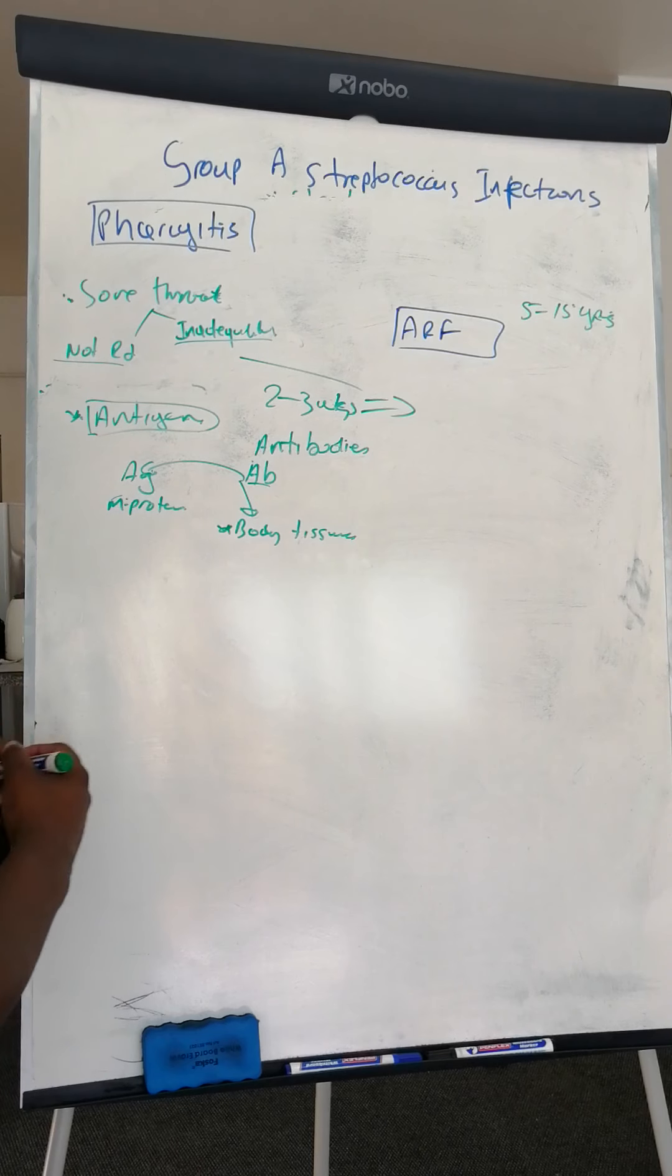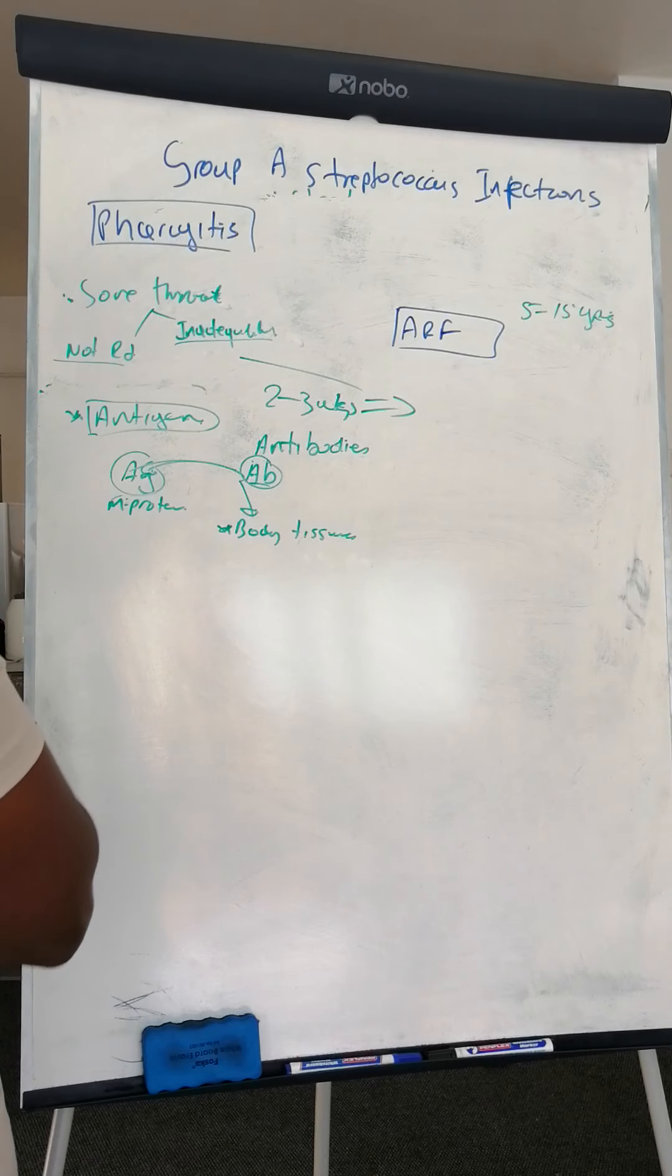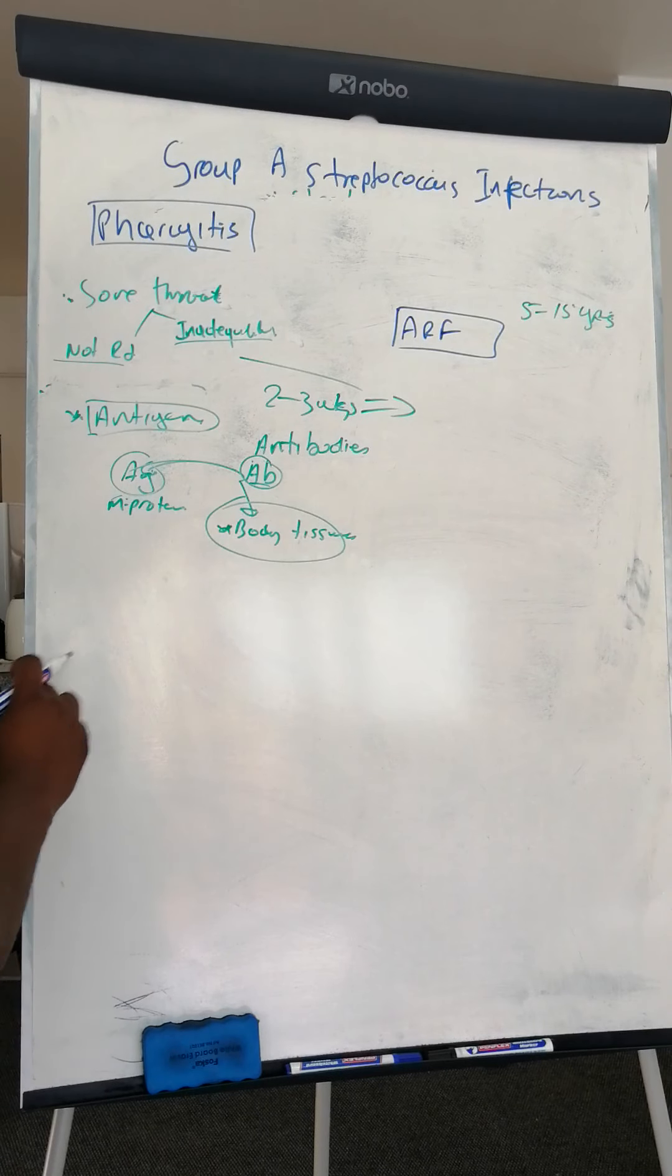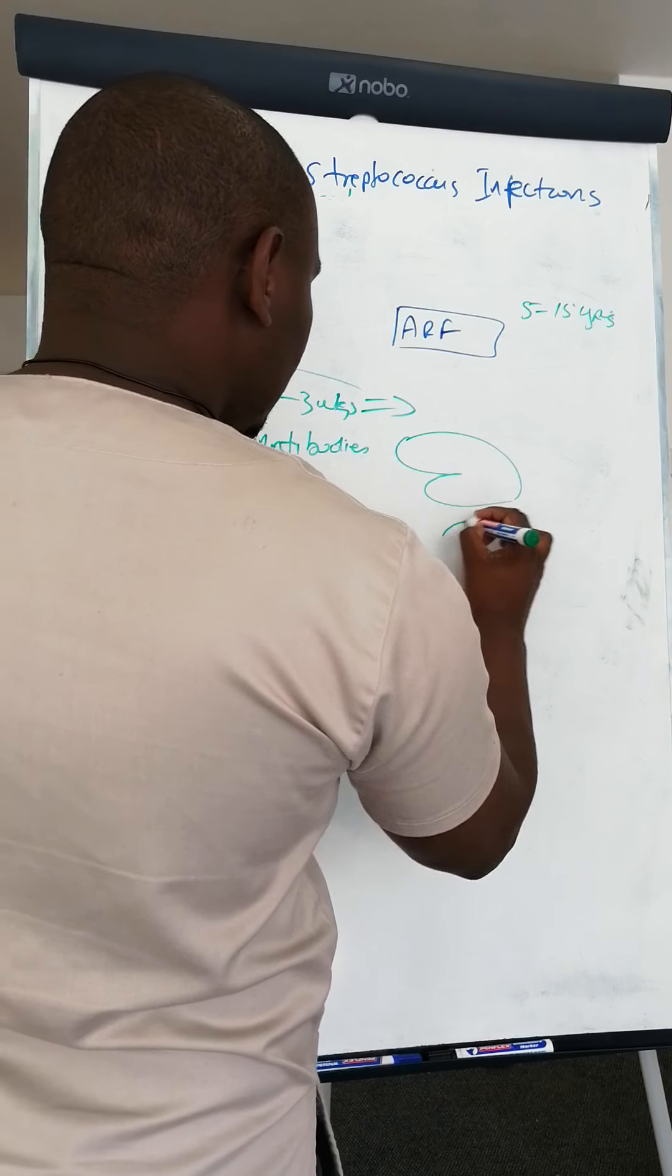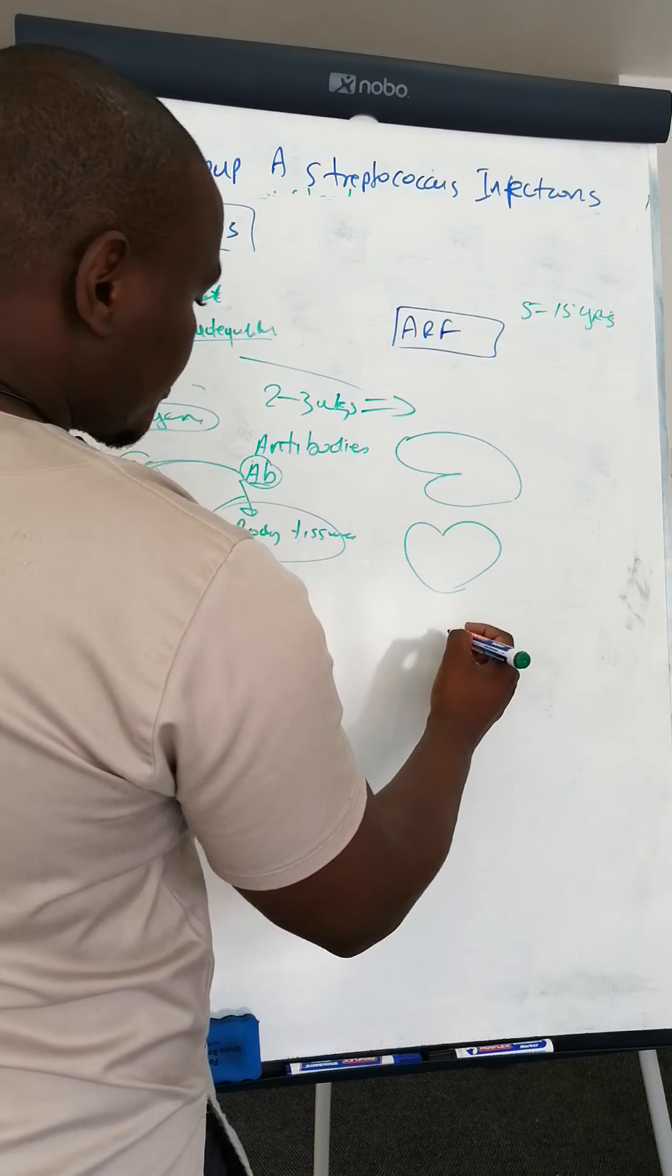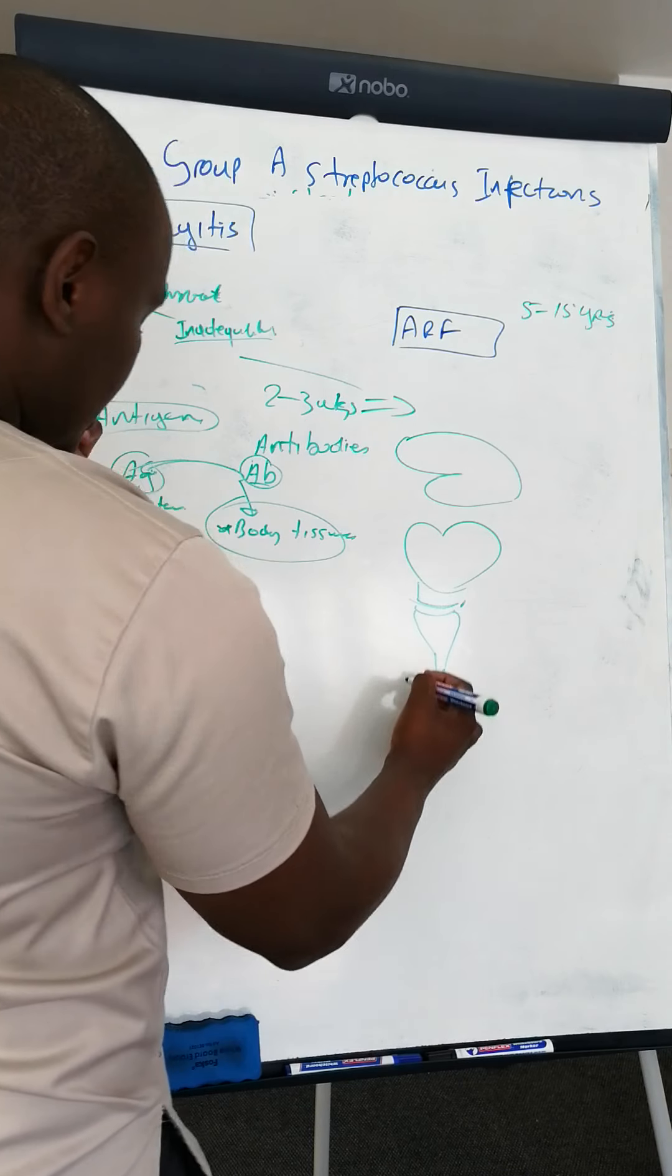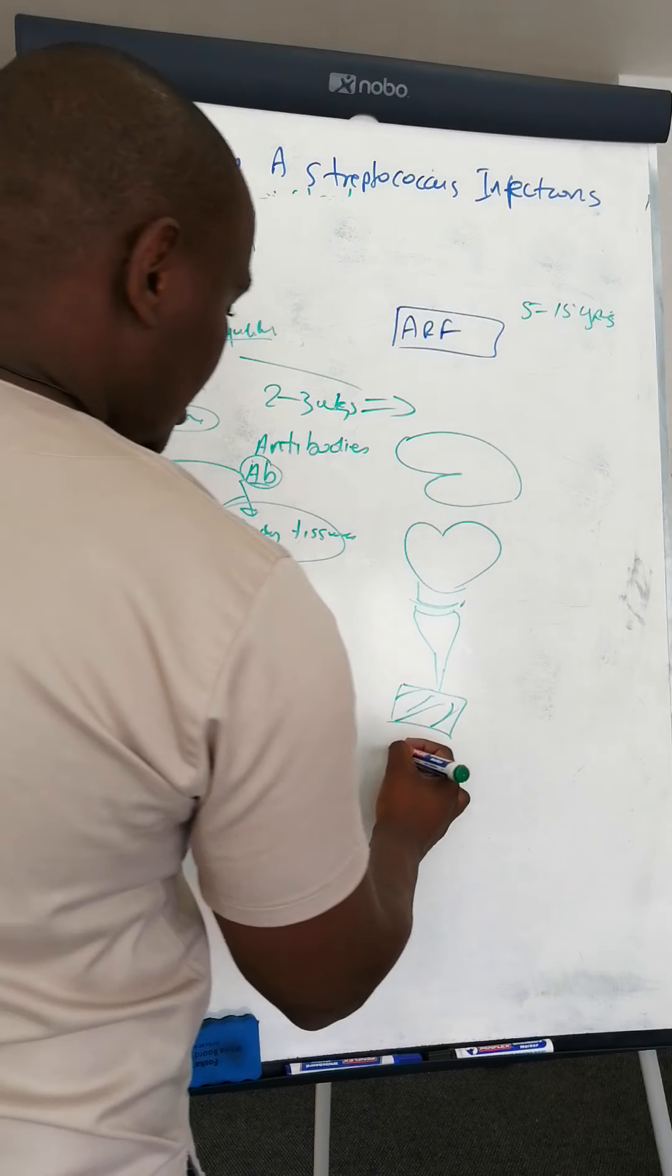So now when you have that, how do your antibodies attack the antigen plus the tissues of the body? The tissues that are being attacked by these antibodies happen to be the brain, the heart, the joints, the skin, and the kidneys.